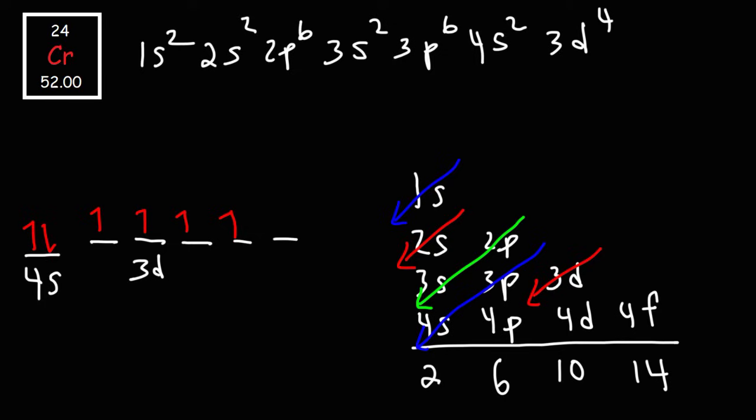Electrons prefer to be unpaired inside an orbital because two electrons, because they both have negative charges, they tend to repel each other. And so these two electrons, they're not too happy sharing a room together, particularly when there's an empty room here. So one of the two electrons is going to jump to this empty room and occupy it. This situation where all of the electrons are unpaired in the upper energy levels is more stable than having them paired in a 4S level.